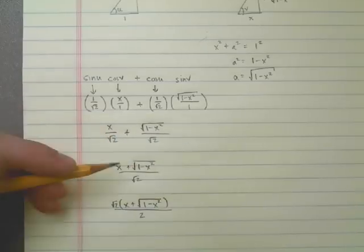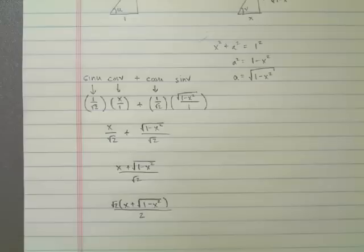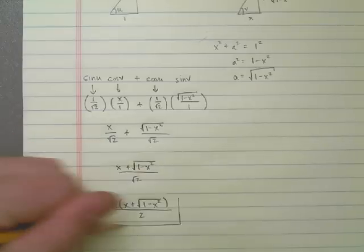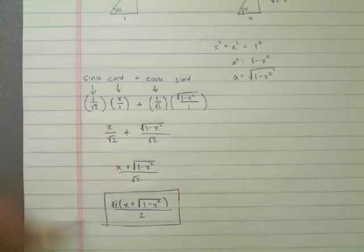Square root of 2 times that over 2, right? 1 over the square root of 2 is the same thing as the square root of 2 over 2. And this is the final answer. Thank you.